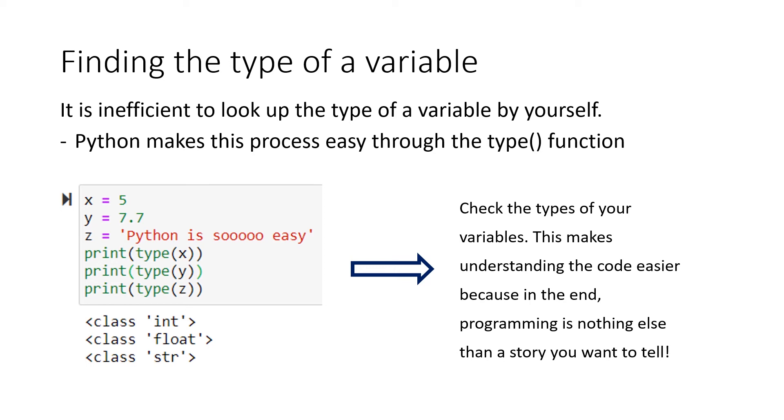Finally, if you forgot the type of the data type of your variable, you don't have to run through the whole code and search for it. You can just use the type function on a variable. In our example, we can use x equals 5, y equals 7.7, and z equals 'Python is so easy'. If we use the type function on each individual variable, the output will be that Python provides us with the class name of that specific variable. In our case, it's integers, floats, and strings.